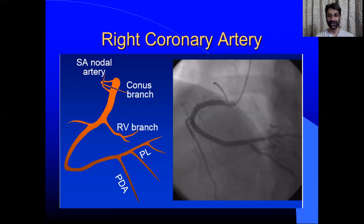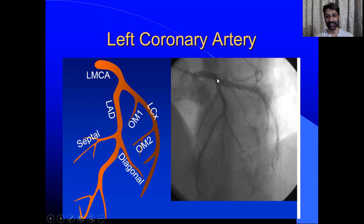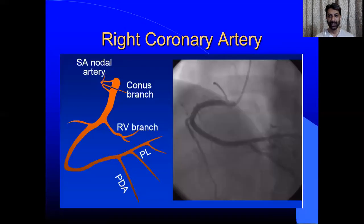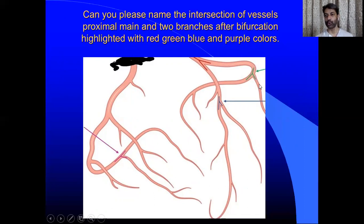Now the second question I asked you was regarding this vessel. We all know that this is the left main, which divides into left anterior descending and left circumflex. The branches of left circumflex are the main circumflex and obtuse marginal. So to conclude the answer: this was left main, left anterior descending, left circumflex, and obtuse marginal.